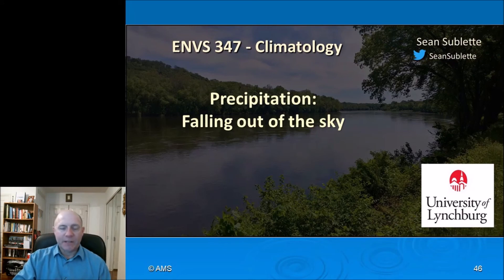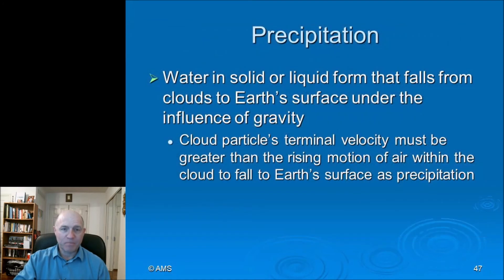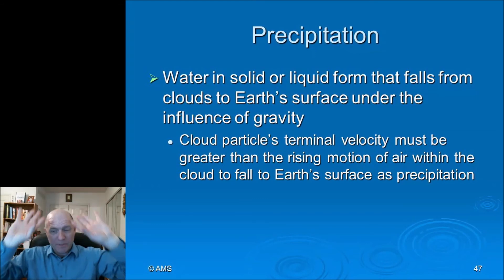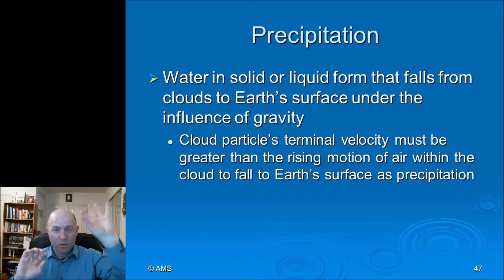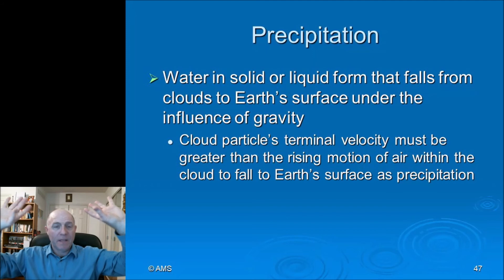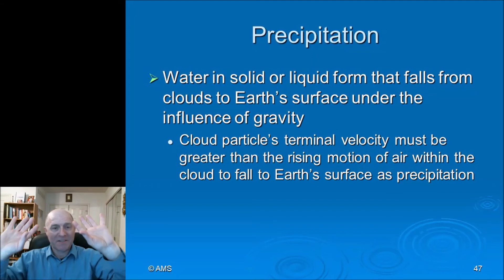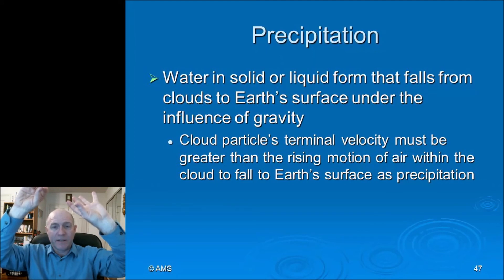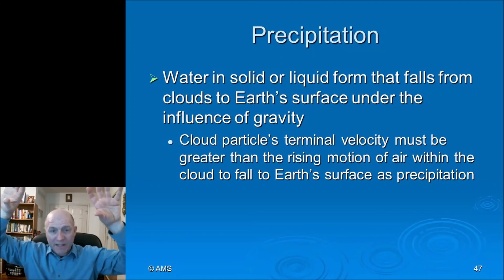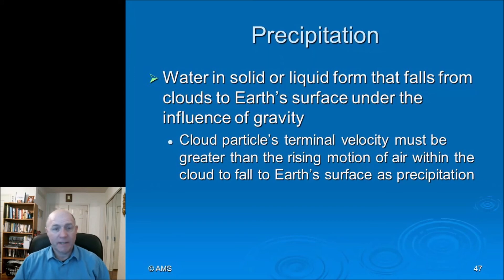Precipitation is solid or liquid water that falls from clouds under gravity when it becomes heavy enough. Clouds have small upward air motions that keep tiny water droplets and ice crystals suspended, but over time the particles grow and eventually gravity pulls them back to the ground.